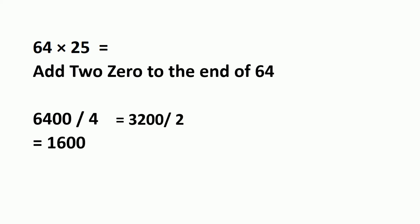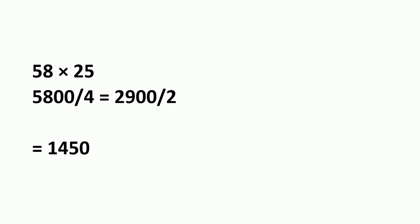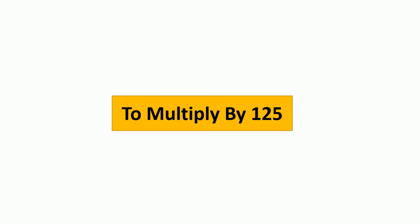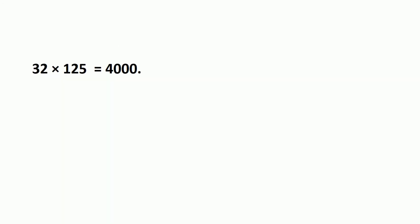Another example: 58 multiplied by 25. Add two zeros to get 5800, then divide by 2 to get 2900, and divide by 2 again to get 1450. To multiply by 125, multiply by 1000 — add three zeros — then divide by 8, or divide by 2 three times, because 2 times 2 times 2 equals 8.